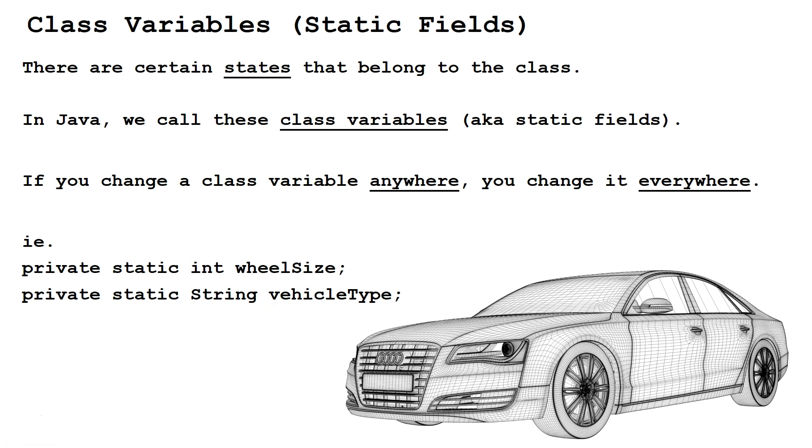All right, so let's talk about class variables. Now, these are static fields, and these are states that belong to the class. In Java, we call these class variables, or sometimes static fields.